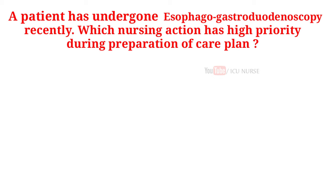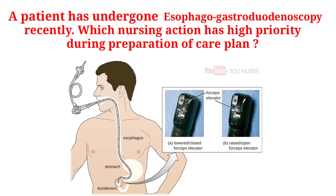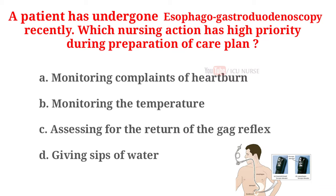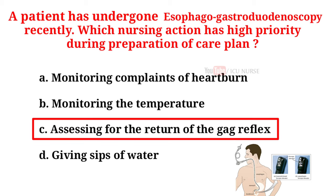A patient has undergone esophagogastroduodenoscopy recently. Which nursing action has high priority during preparation of the care plan? A. Monitoring complaints of heartburn. B. Monitoring the temperature. C. Assessing for the return of the gag reflex. D. Giving sips of water. And the correct answer is C. Assessing for the return of the gag reflex.